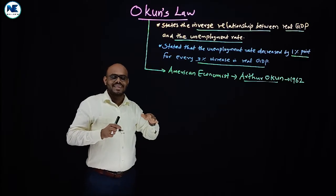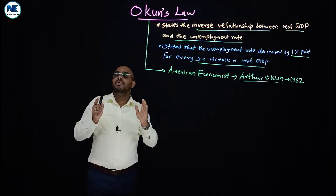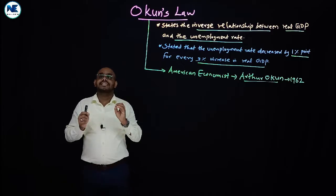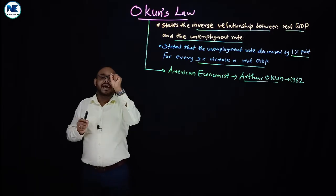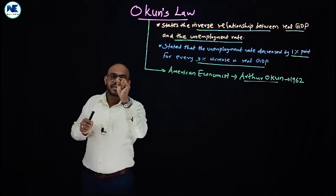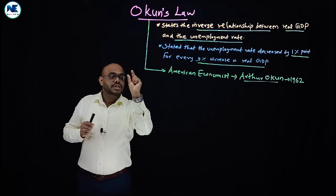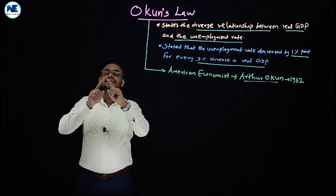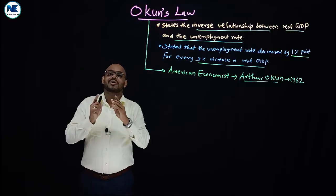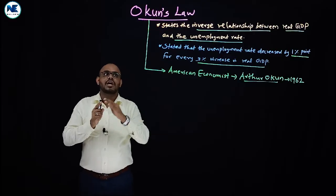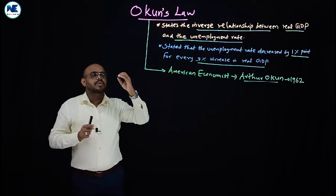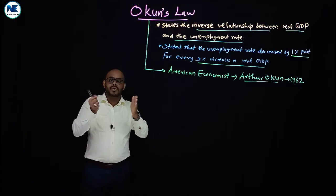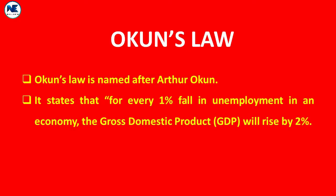From macroeconomics, you can learn the concepts of actual GDP, potential GDP, and GDP gap. We will also calculate a formula — a mathematical representation of Okun's Law.